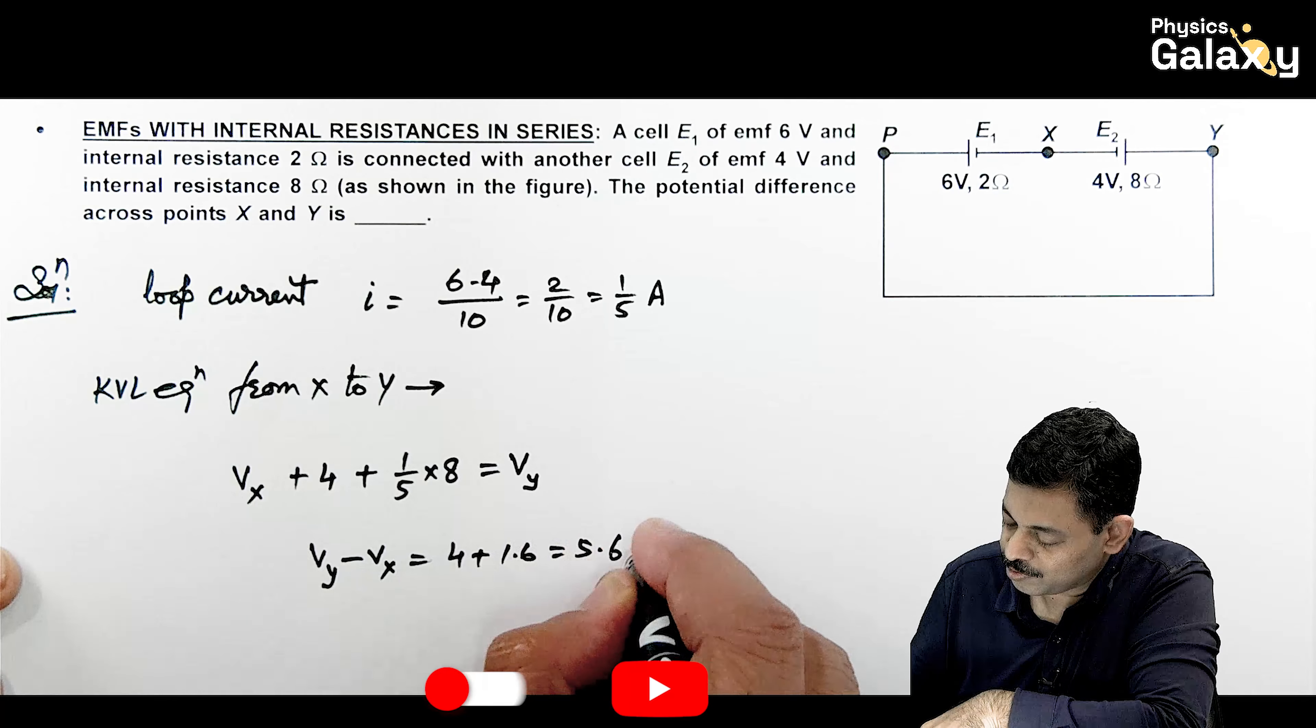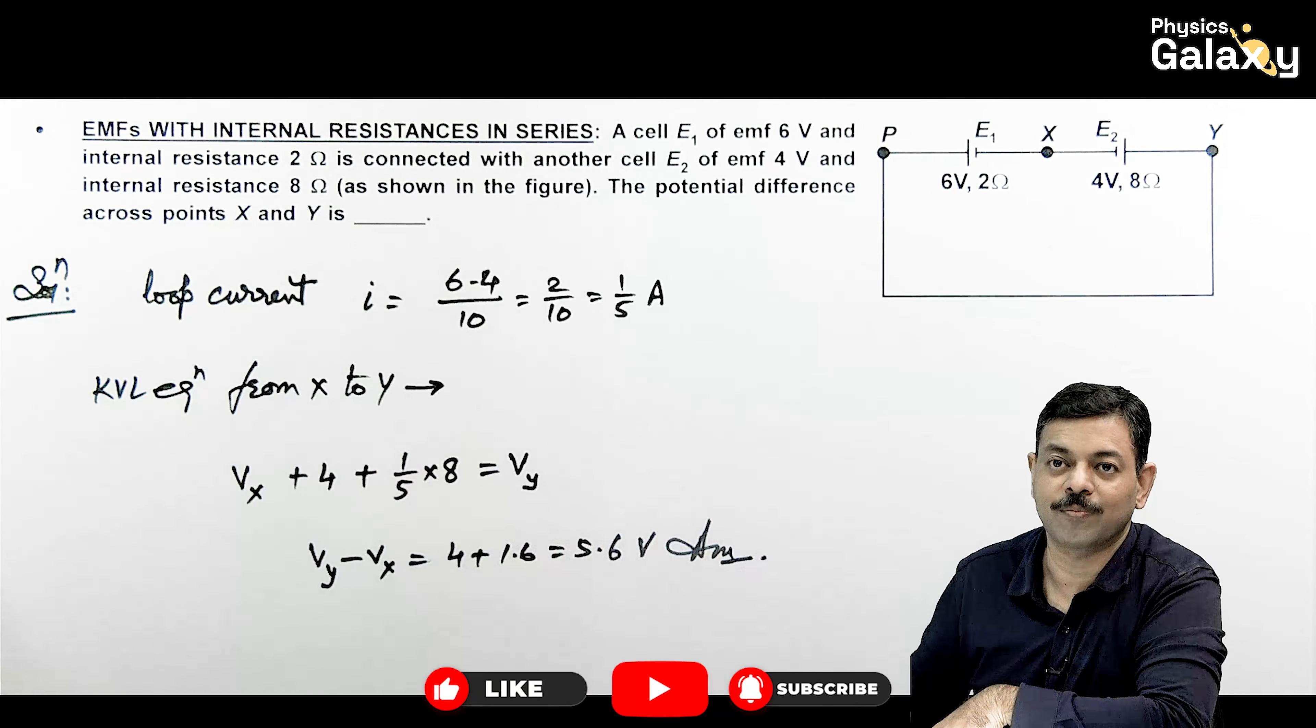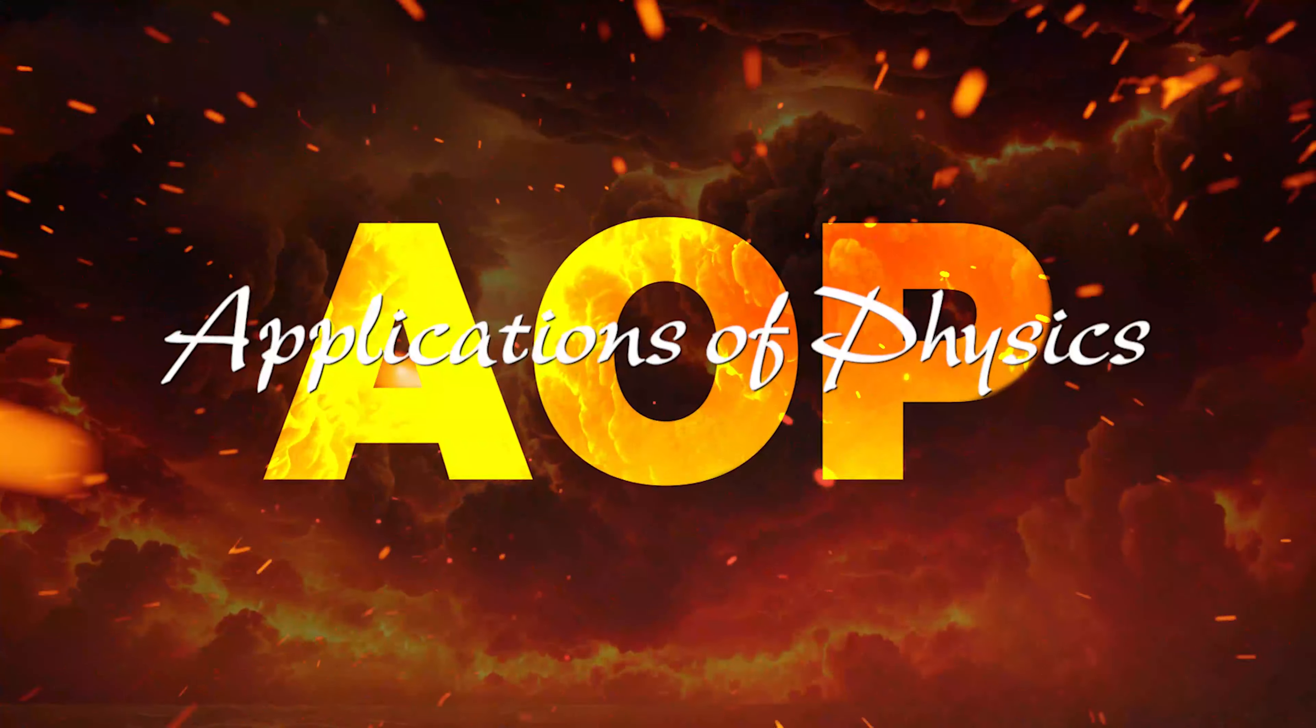So this plus IR is 1 by 5 into 8 comes out to be VY. So this gives us VY minus VX. This is 4 plus 8 by 5 is 1.6, which is 5.6 volts. That is the answer to this problem.